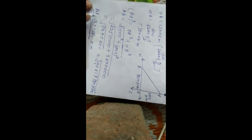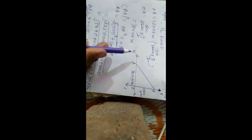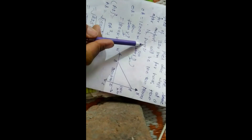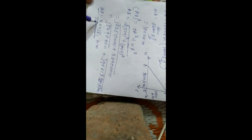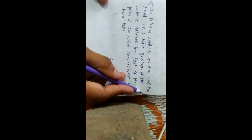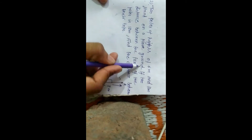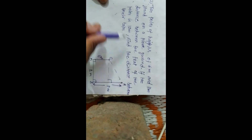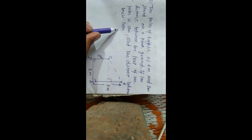We found OA and OB using the 3/2 time factor. By Pythagoras theorem, we calculated the distance. Now let's discuss question 12: two poles of height 6 meters and 11 meters stand on plain ground. If the distance between the feet of the poles is 12 meters, find the distance between their tops.